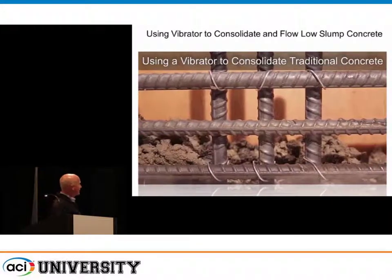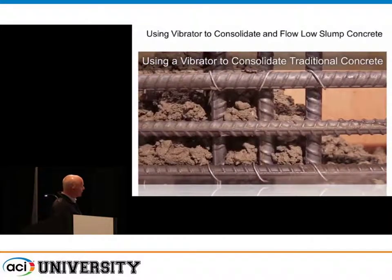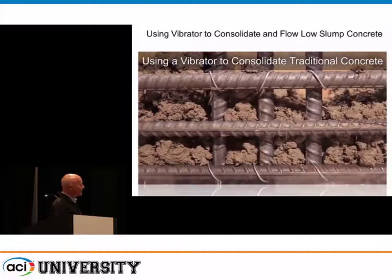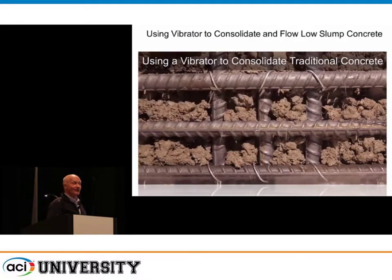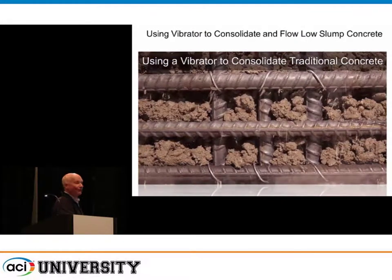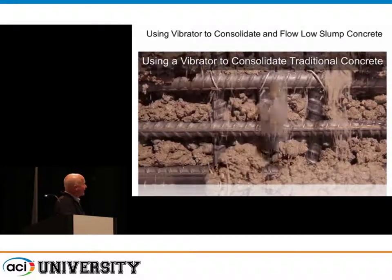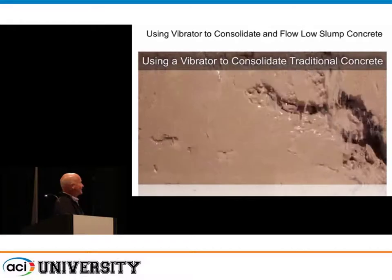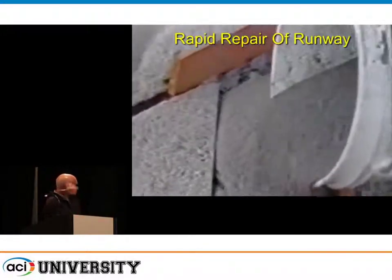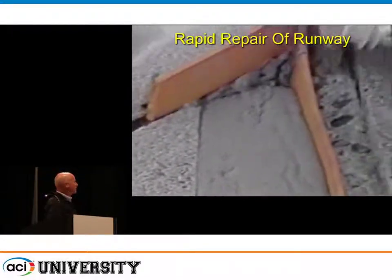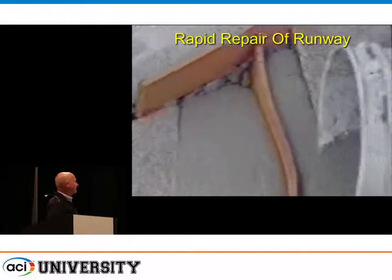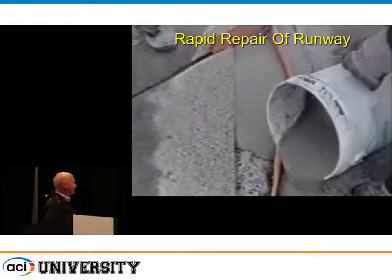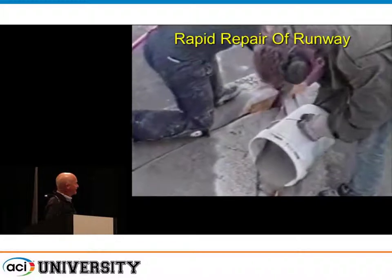I'm showing a low water-cement ratio concrete — 0.4 — placed in a partial depth repair. It looks pretty damn stiff. But look what a vibrator does — stick the vibrator into that stiff material and it turns into something that looks like self-consolidating concrete. How awesome is that? This is on a runway where there was some spalling along a crack. The vibrator transforms the stiff mix into easily workable, well-consolidated concrete.